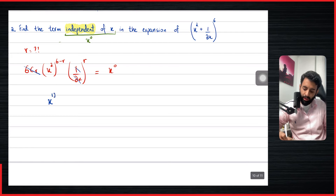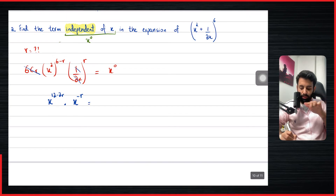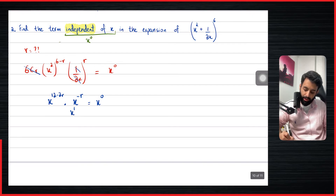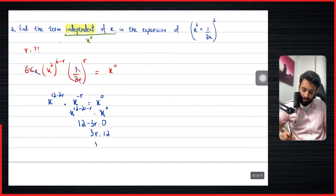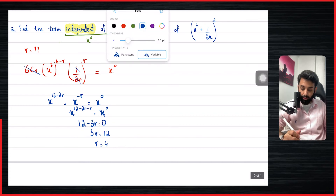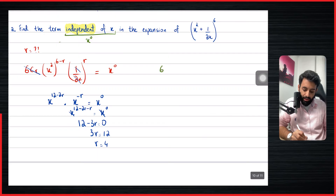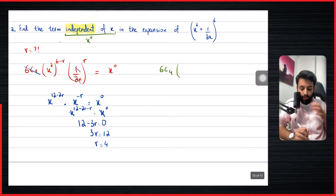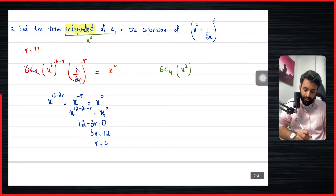This becomes x^(12−2r) multiplied by x^(−r), equals x^0. Moving x from the denominator gives x^(−1), and (x^(−1))^r = x^(−r). Adding the powers: x^(12−2r−r) = x^0, so 12 − 3r = 0. Solving gives 3r = 12, meaning r = 4. But don't stop here — we still need to plug r back into the formula to find the actual term.